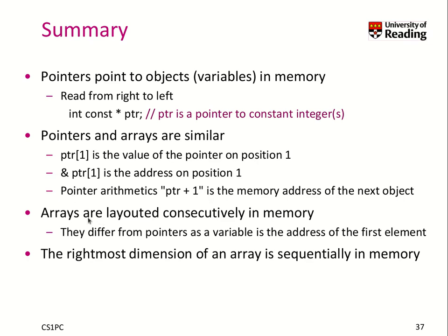Arrays are laid out consecutively in memory, and they differ in that sense from pointers. PTR as a variable is directly in the symbol table the address of the first element, while a pointer represents an object somewhere in main memory that stores a variable address.